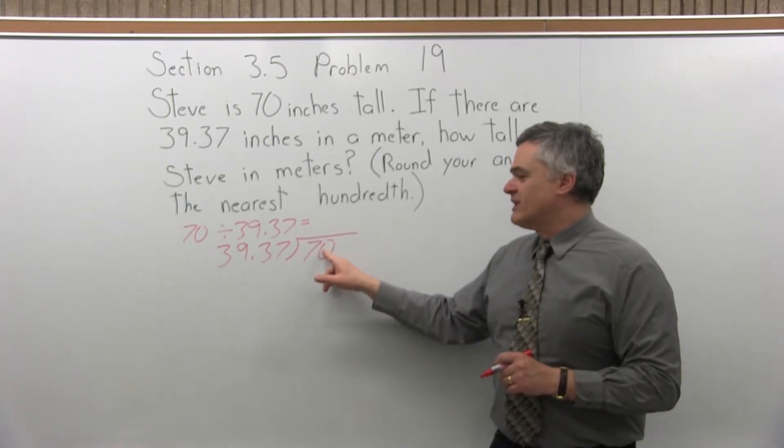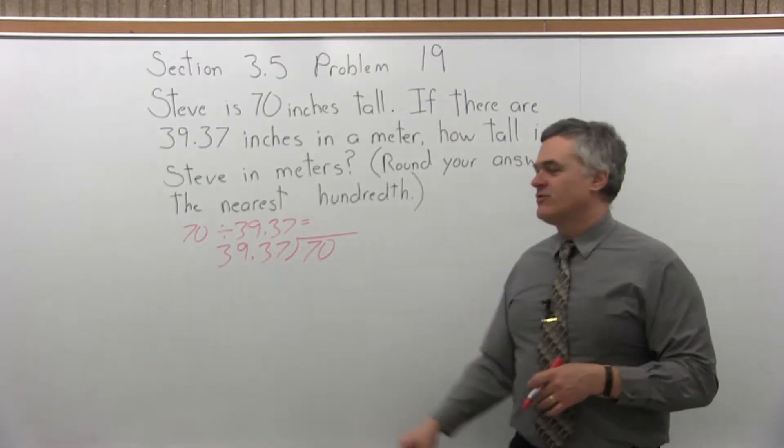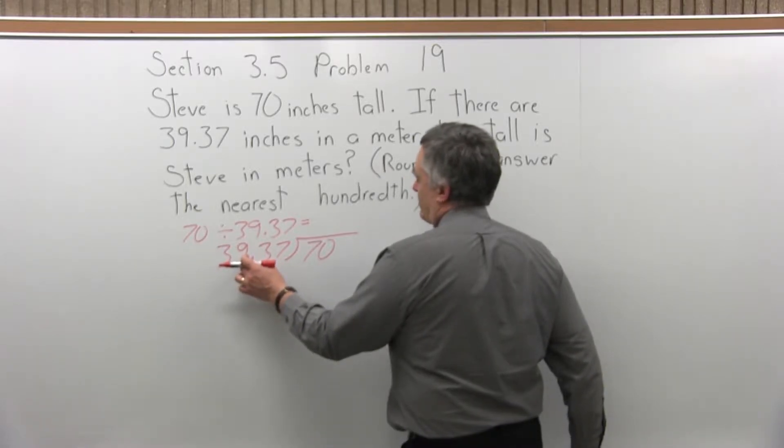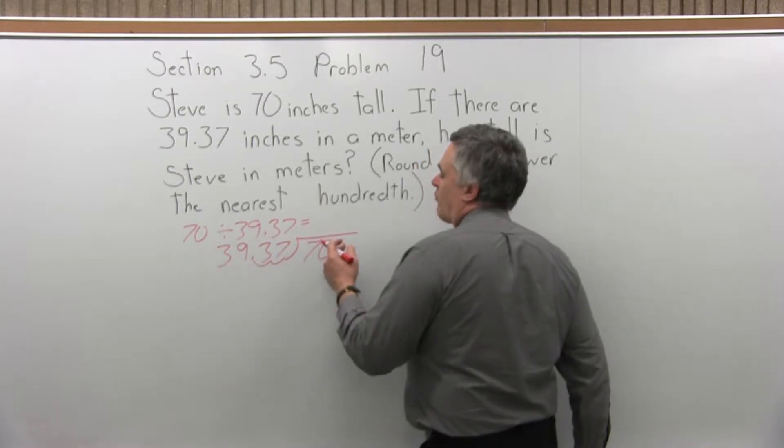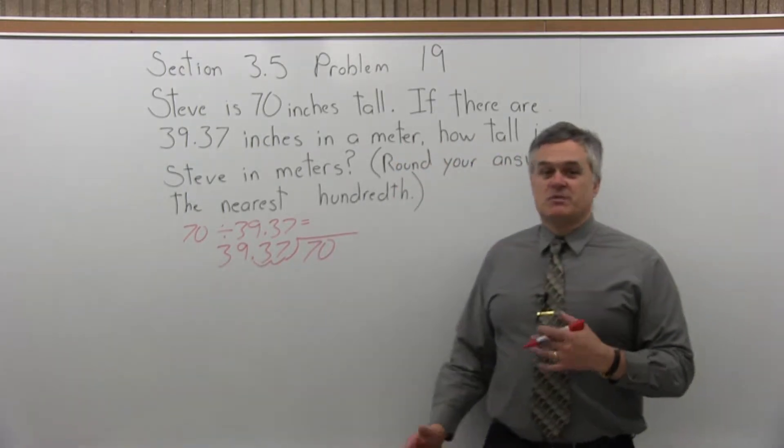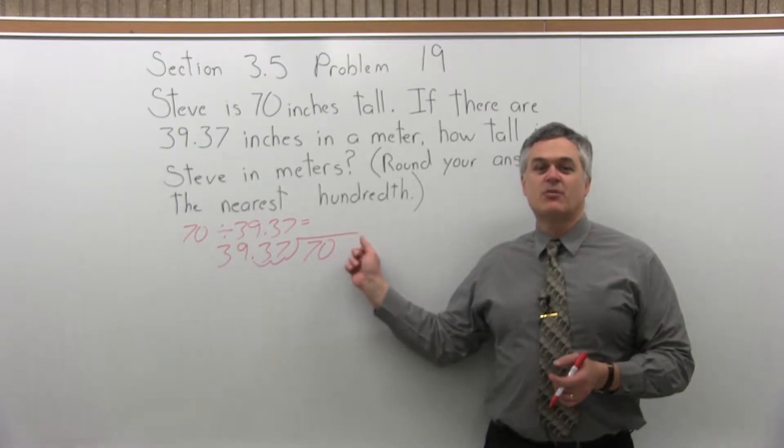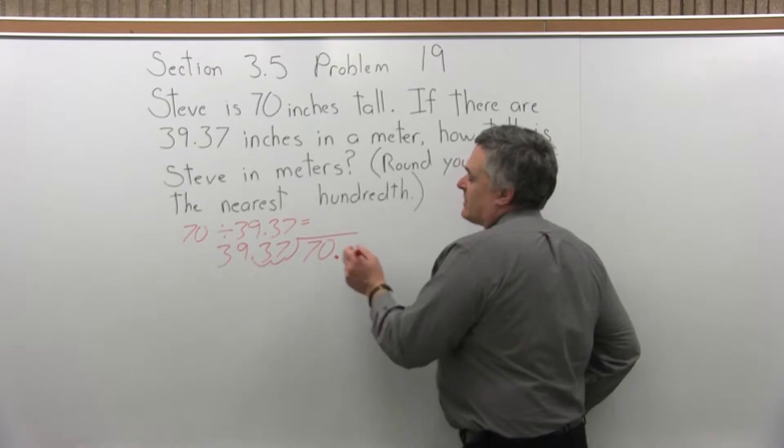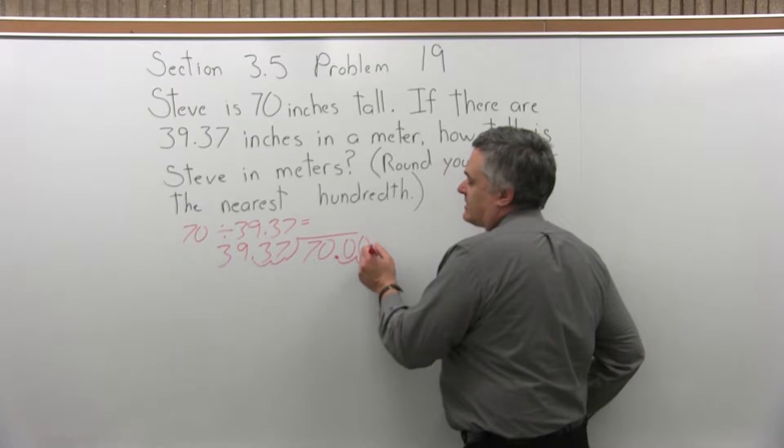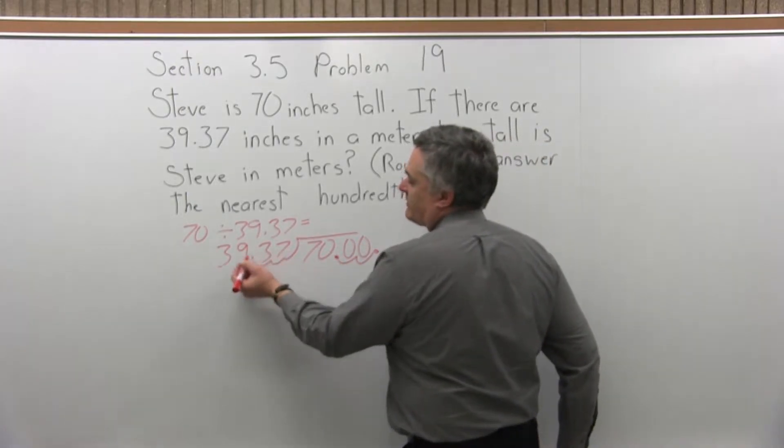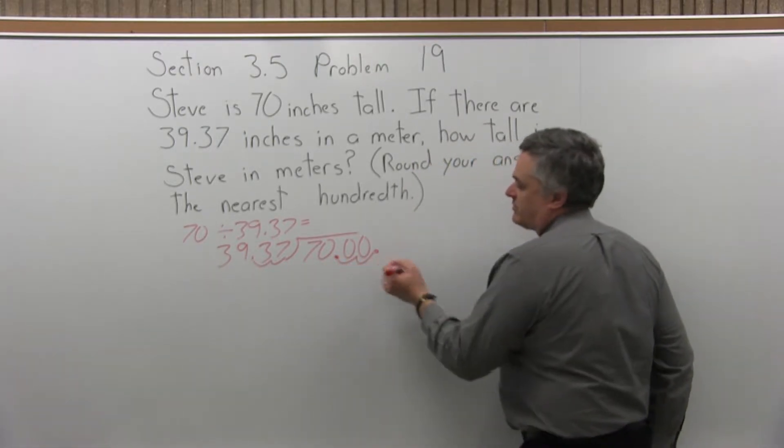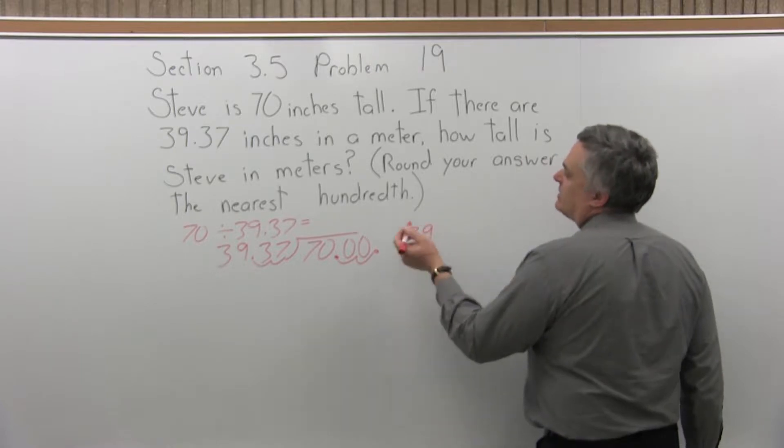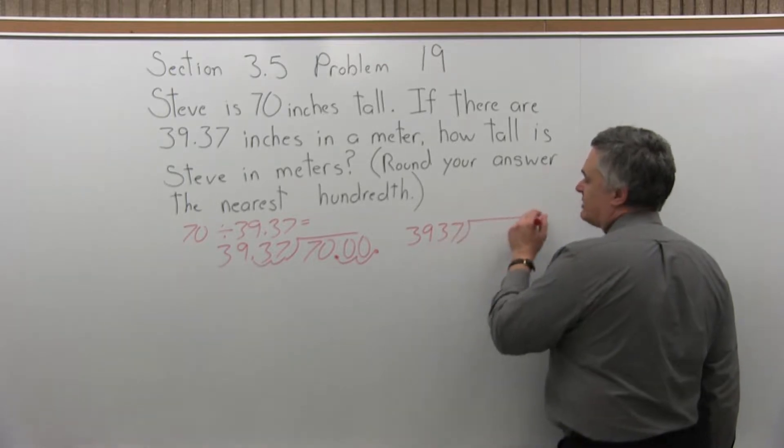To do it by hand though, you want to write the 70 under the division symbol and put the 39.37 in front. Now to start the problem going, the number in front of the division symbol, you can't leave the decimal point between the 9 and the 3. It has to be pushed as far to the right as it will go, which means it has to move over two spaces. Now you can move it as many spaces as you want, as long as you move it the same number of spaces for the number under the division symbol, the 70. 70 has no decimal written, so you can assume that the decimal is at the end of the 70. Now if you move it two places, I have to fill in two zeros to hold those places. So to do it by hand, the division that has to occur really is 3937 divided into 7000, and that will give us Steve's height in meters.